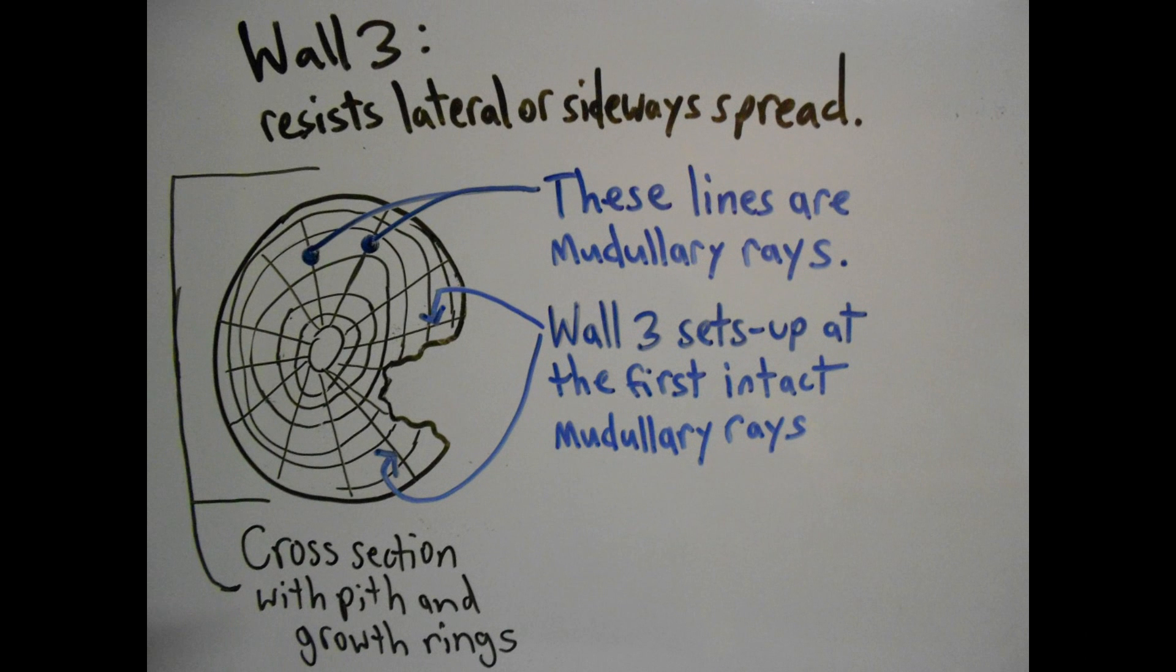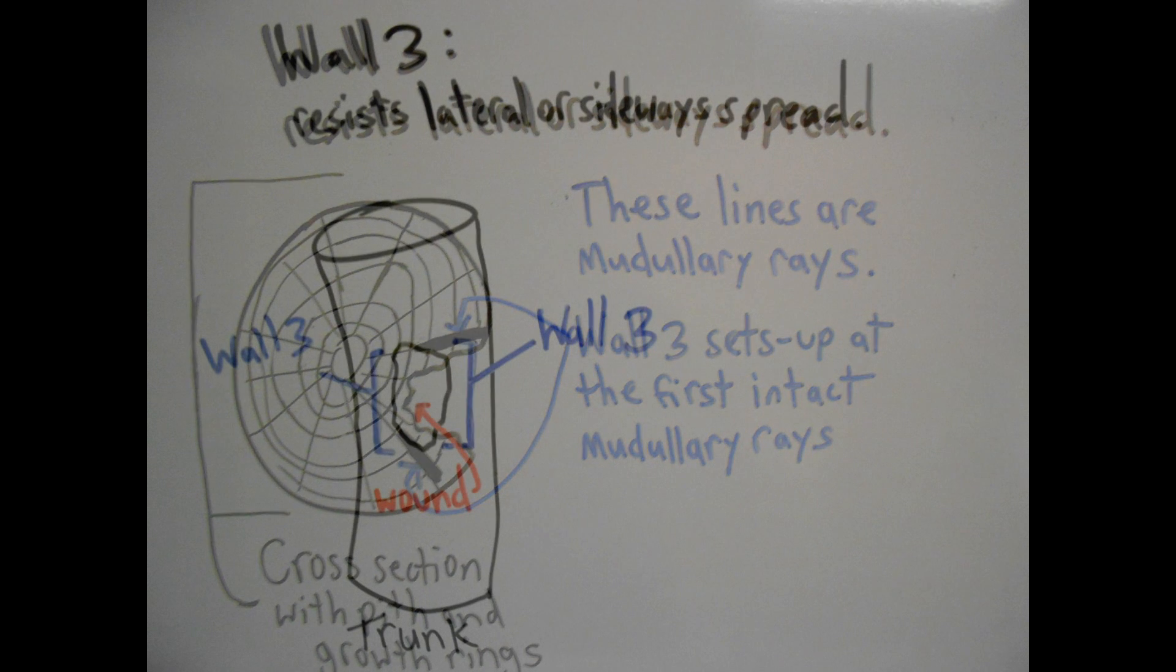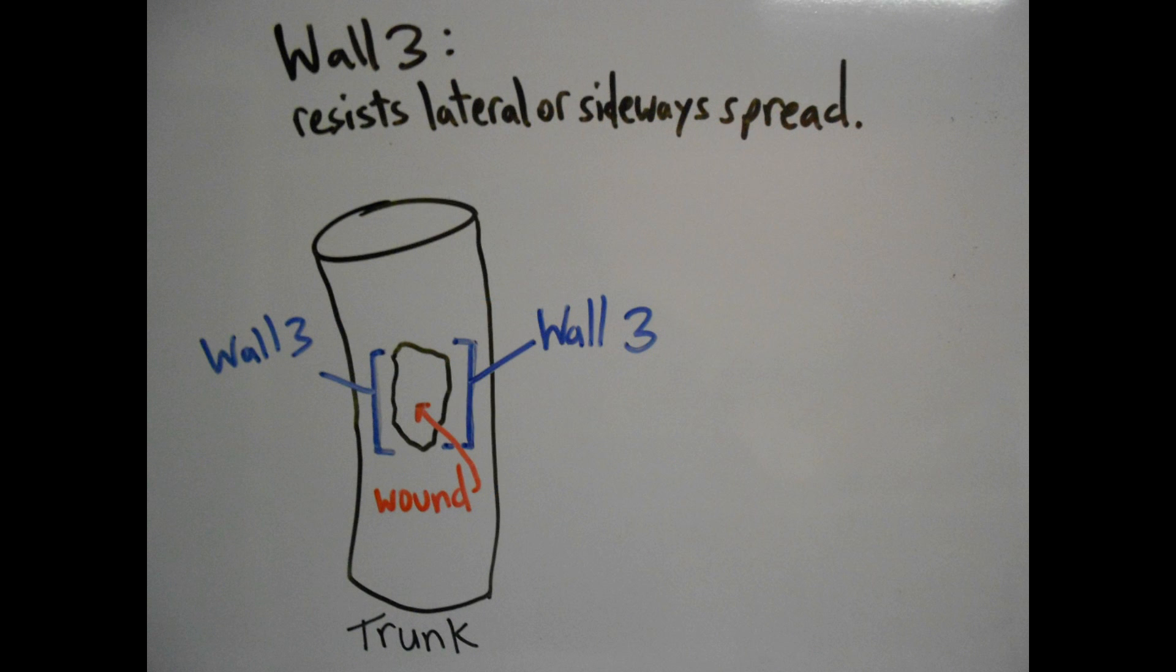The third zone, or wall three, is set up on either side of the wound at the intact medullary rays, resisting lateral or sideways spread. The medullary rays are responsible for lateral movement of sugars. The build-up on the left and right of the wound are constantly recharged with sugar, making this barrier the strongest of the three produced at the time of wounding.